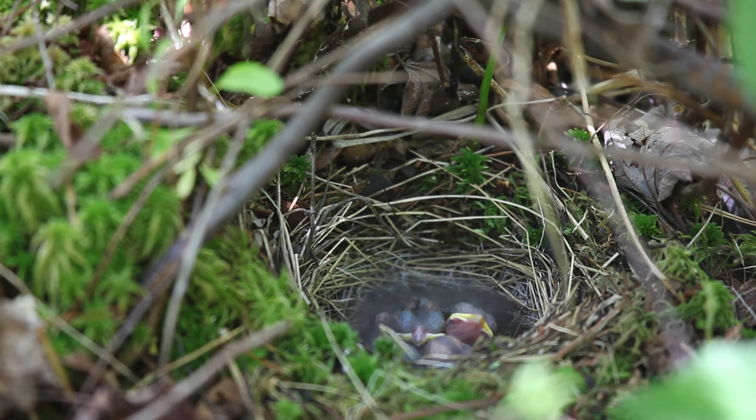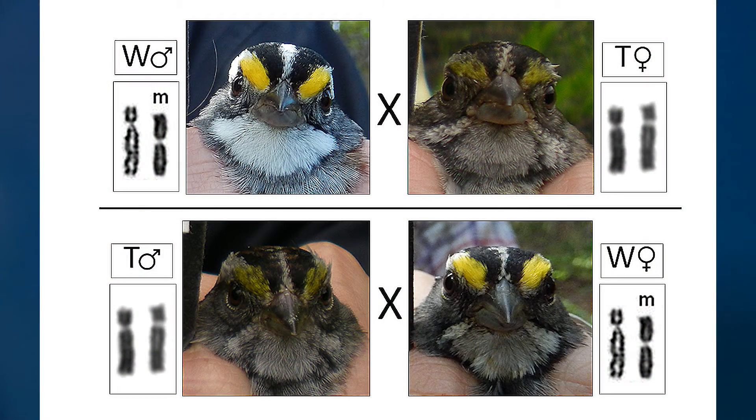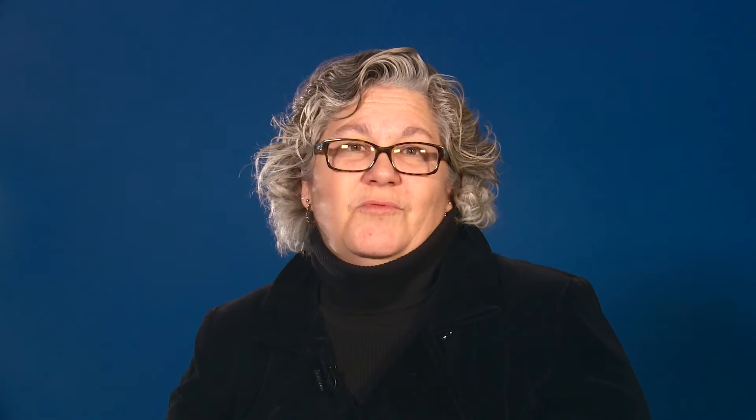The extreme nature of this disassortative mating sets up a situation where there are effectively four sexes: white males, tan males, white females, and tan females. Examples of animals with more than two sexes are very uncommon, and theory suggests that such systems should not be stable. So despite the apparent stable nature of the white and tan polymorphism, it may actually be unstable over long evolutionary time periods. Given enough time, the four-sex system of the white-throated sparrow may eventually collapse into a two-sex system.